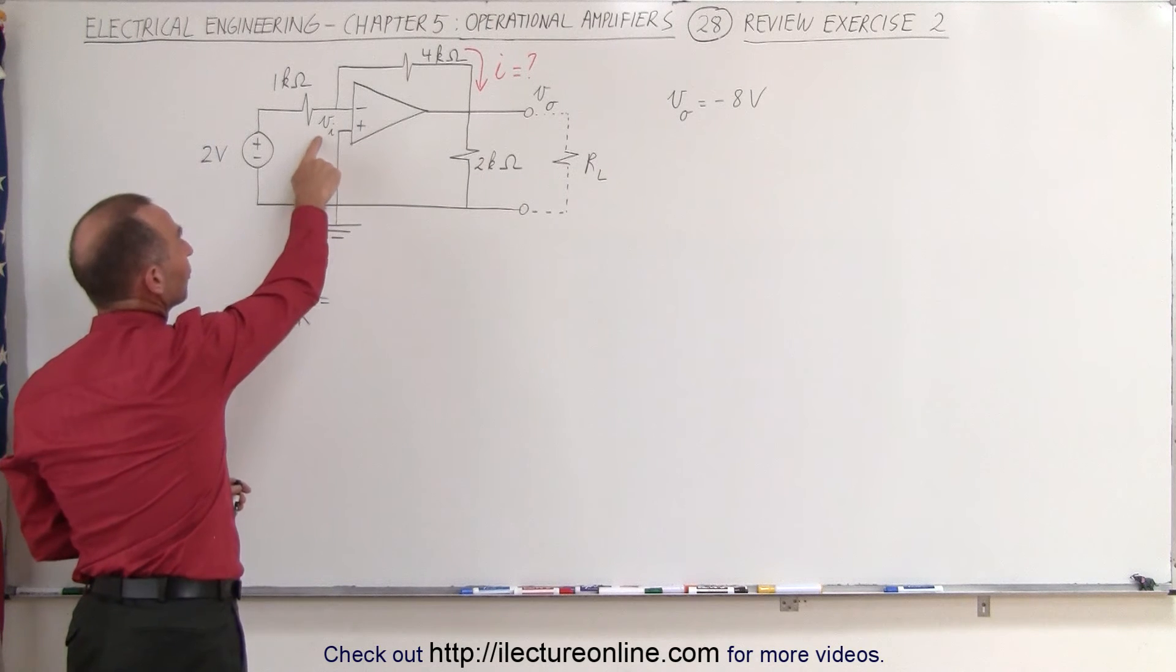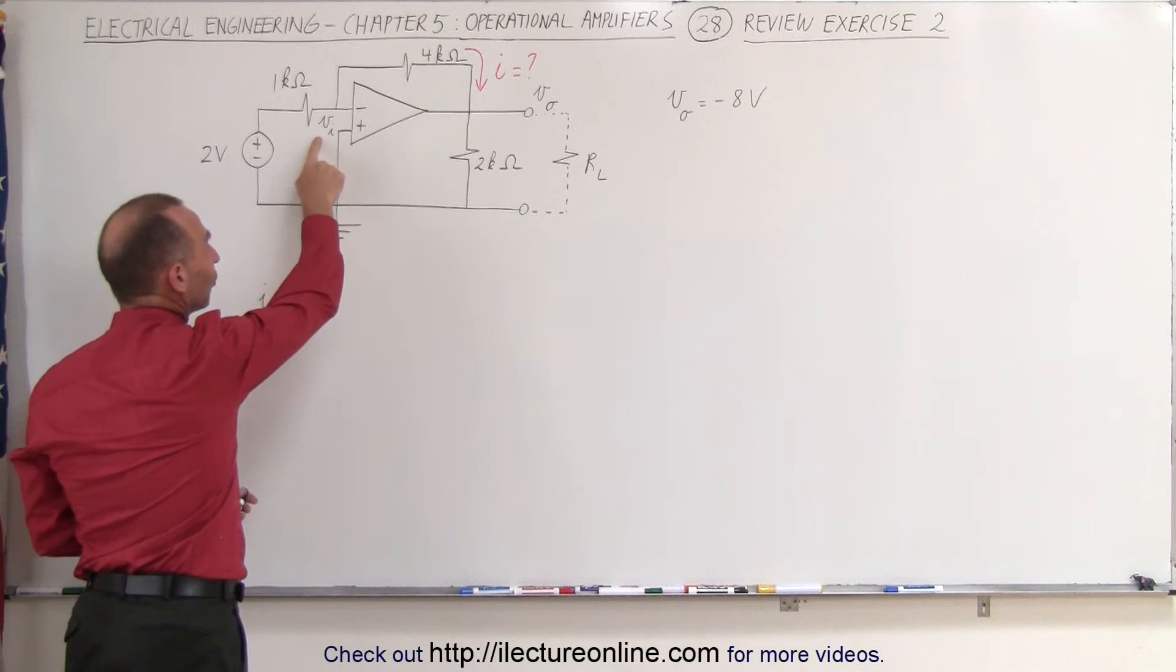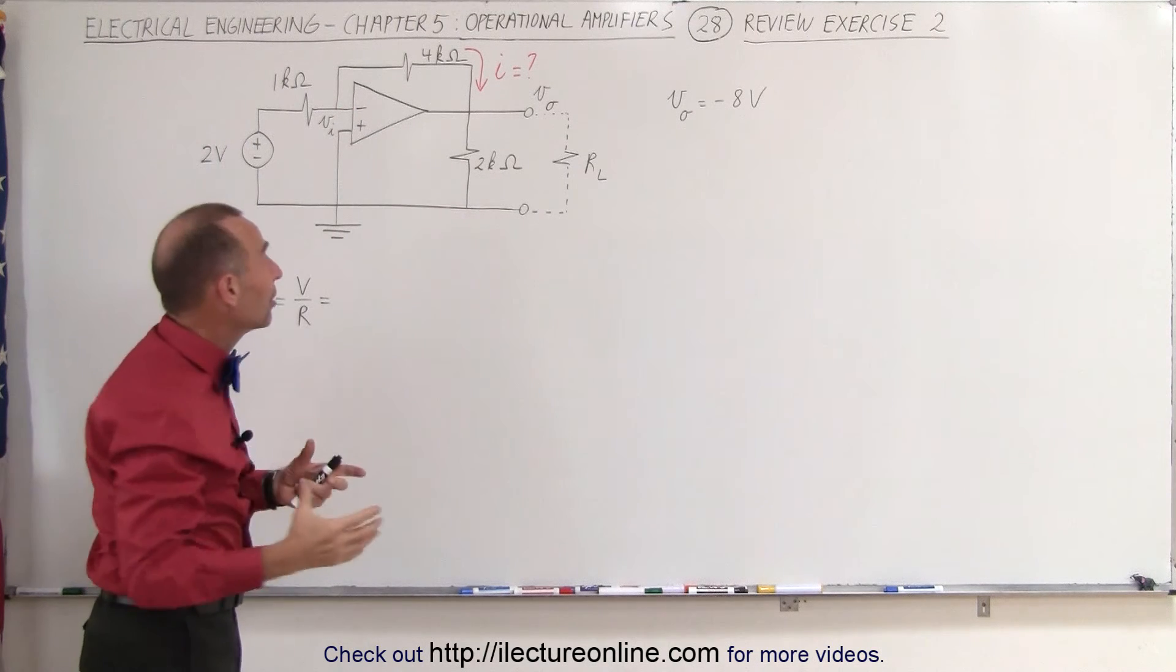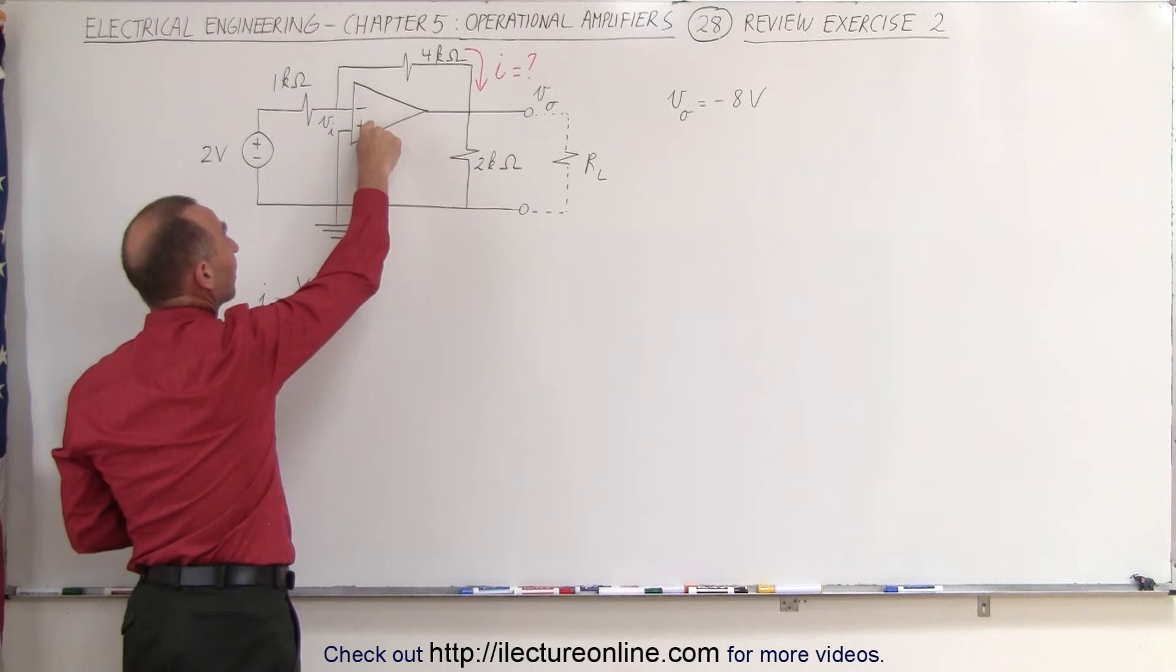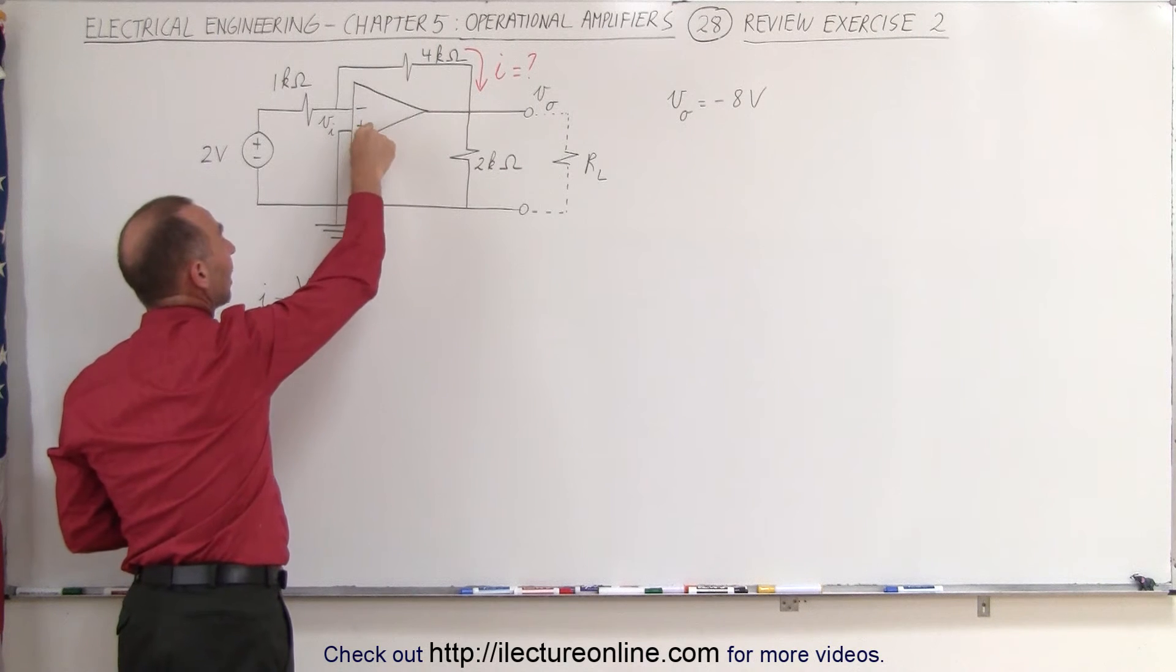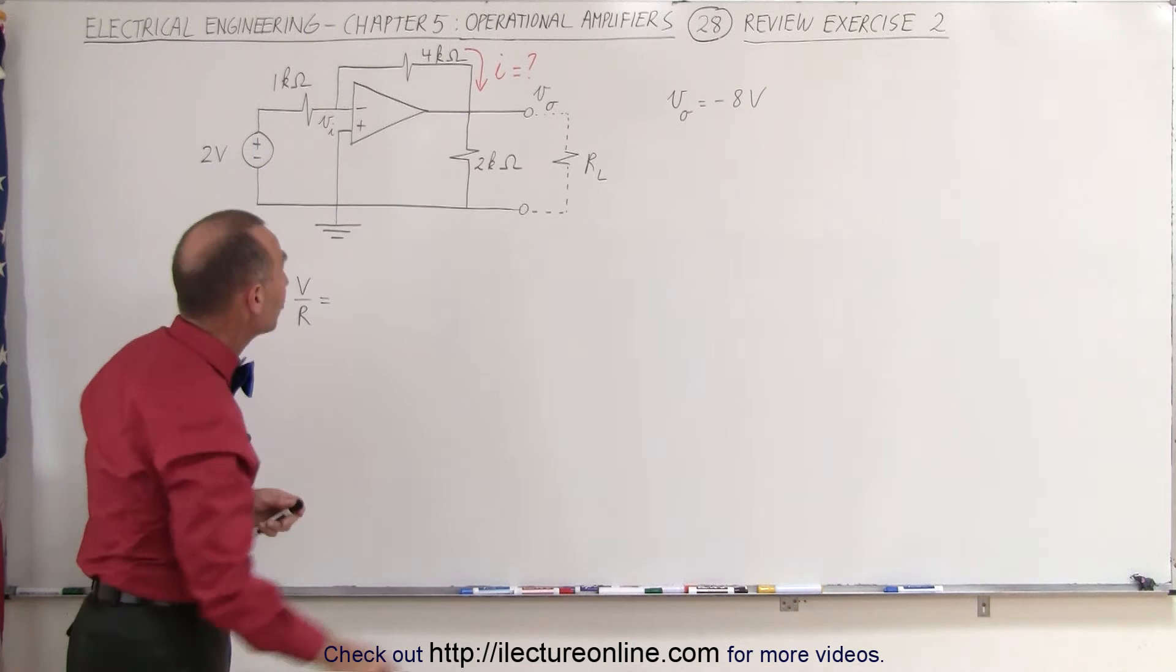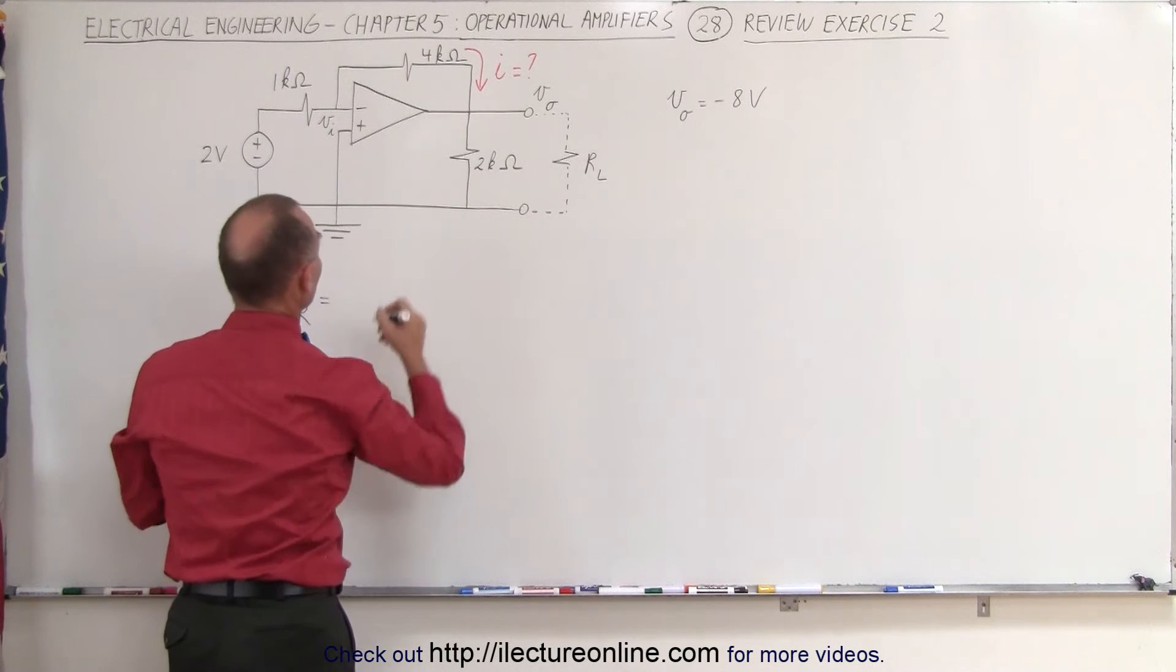Now the voltage on the inverting input here should be 0 volts because on an ideal operational amplifier there is no voltage difference between the inverting and the non-inverting input, and the non-inverting input is connected to ground which means that V sub i should equal 0.